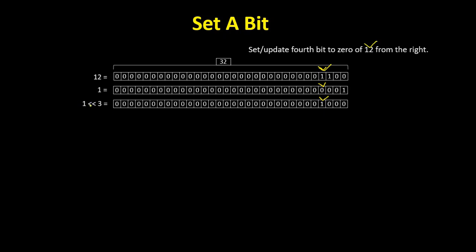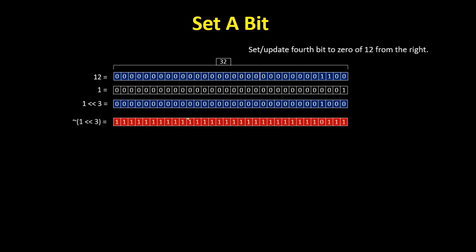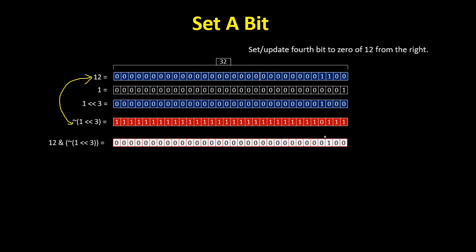Now we're going to find out the one's complement of this. The one's complement of this binary number changes 1 to 0 and 0 to 1. If we do a bitwise AND operation between the original value and this complemented binary number, then we get this binary number. And we see that this bit is now 0. We have updated the fourth bit to zero of 12, and this number is equivalent to 4. This is how we can update a specific bit to zero.